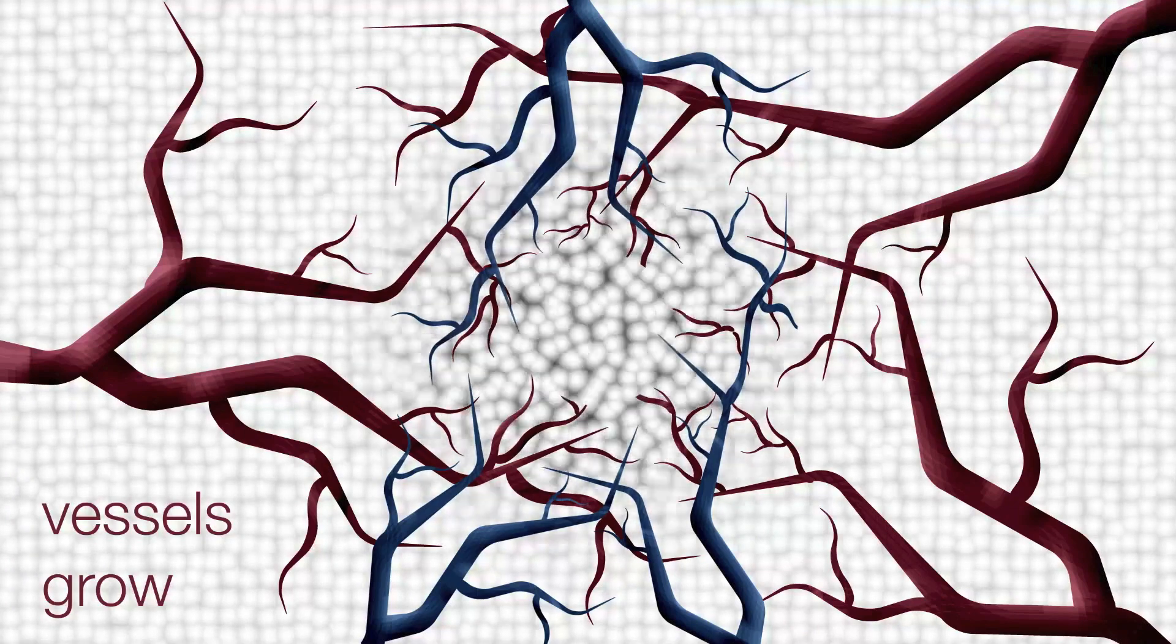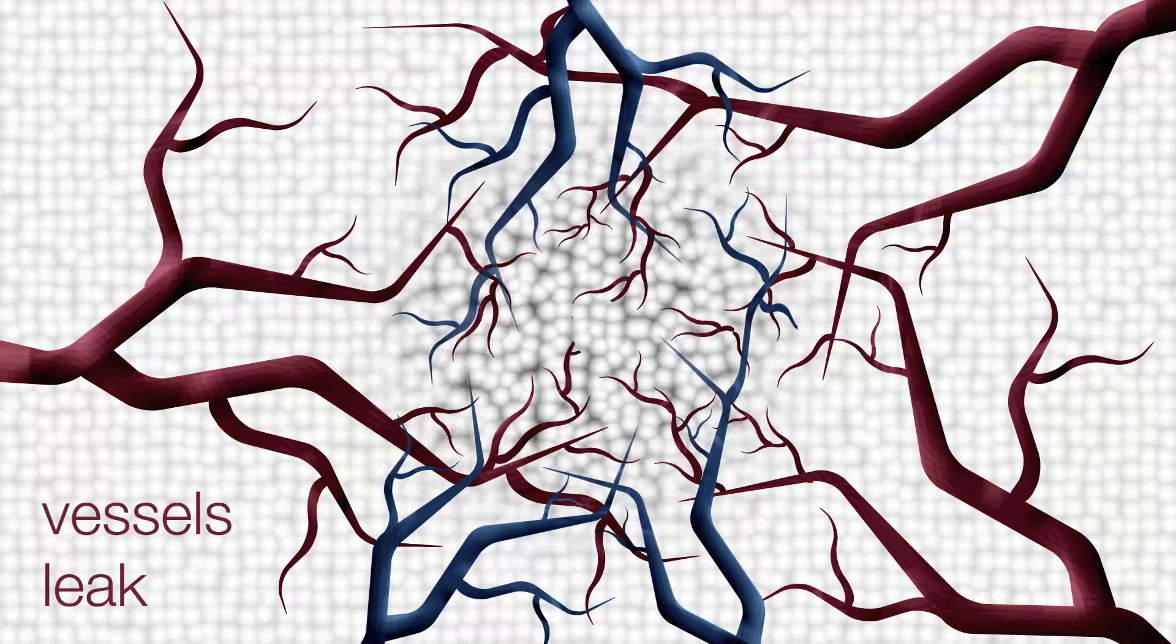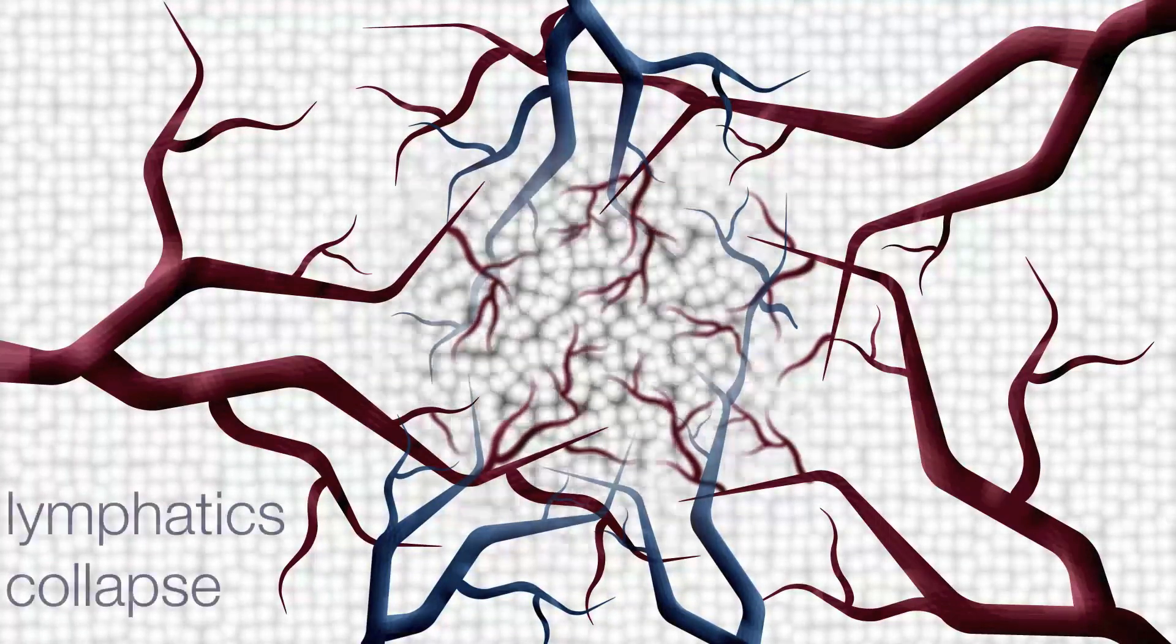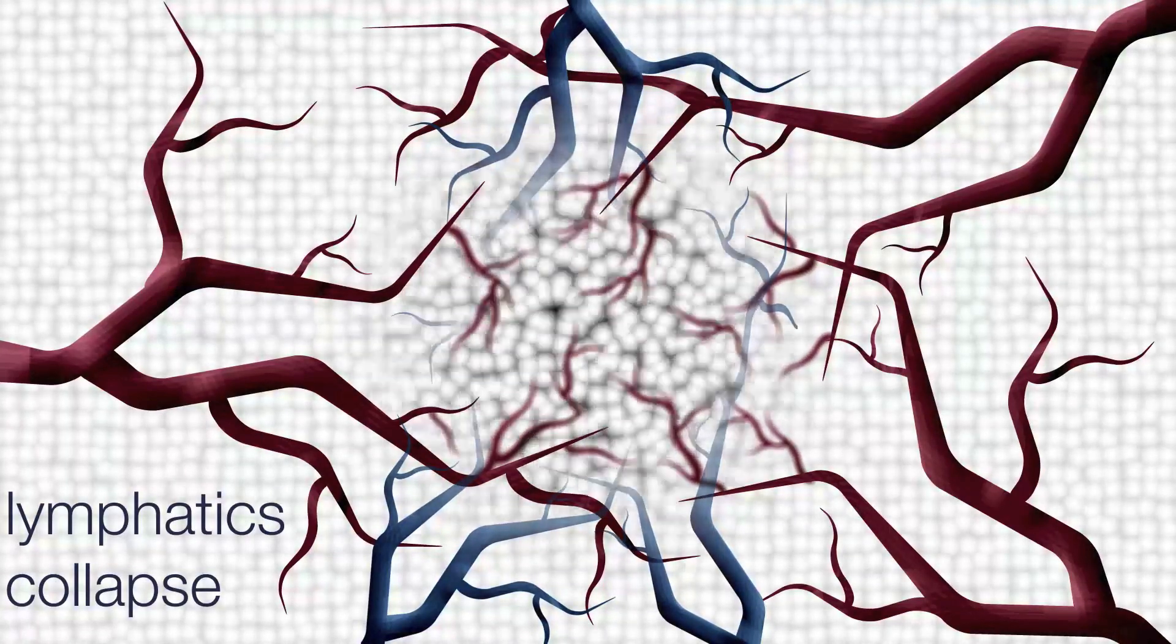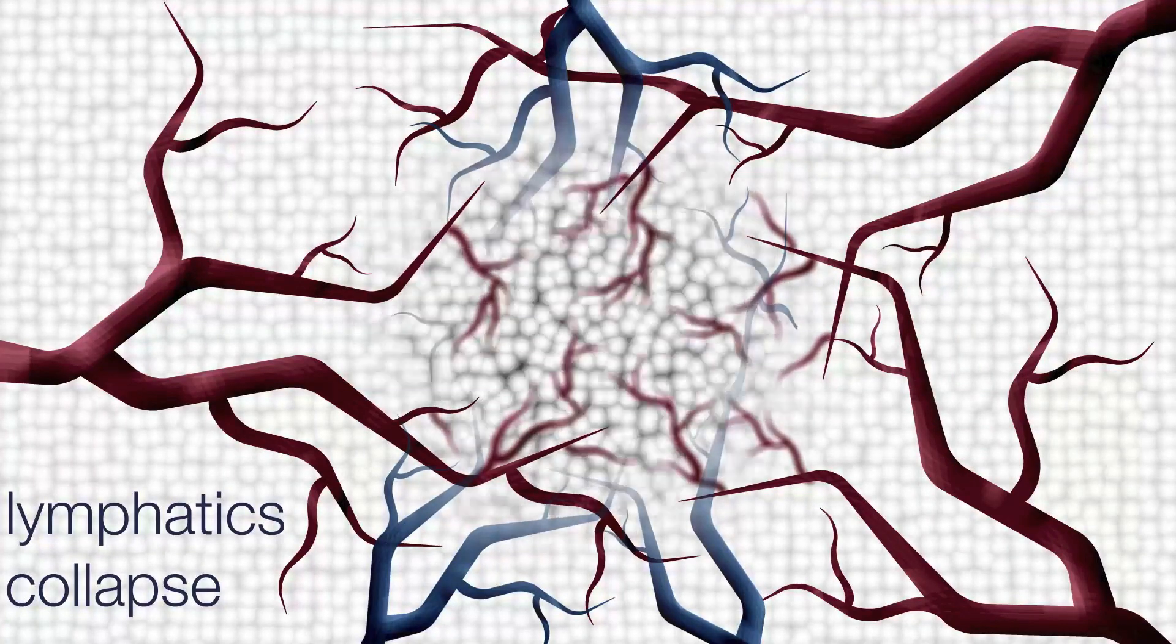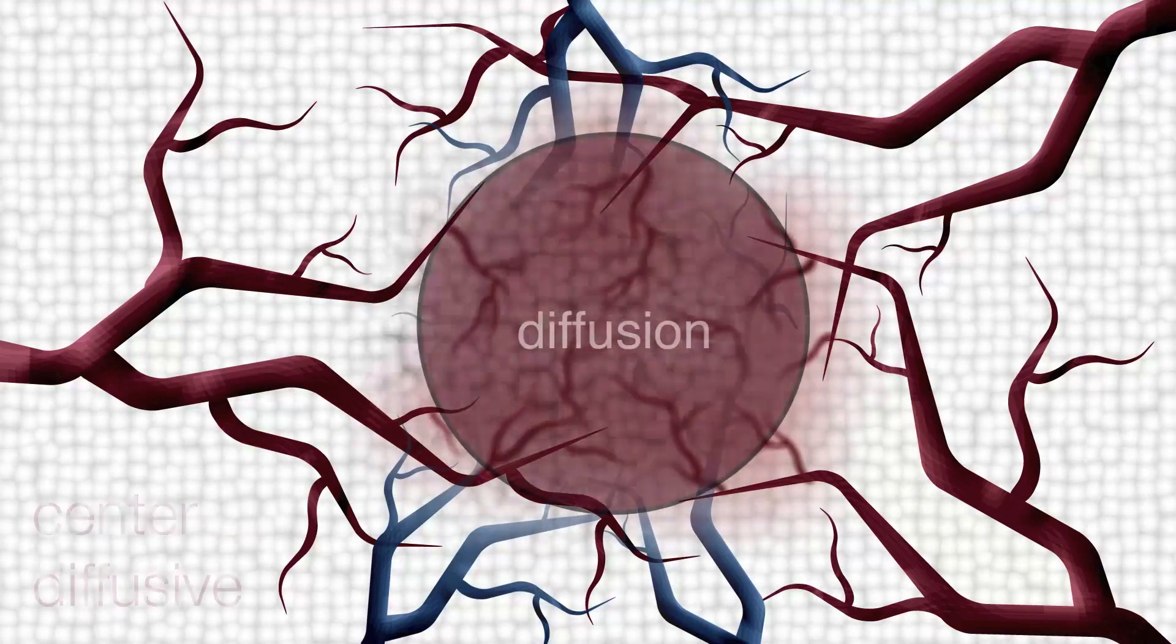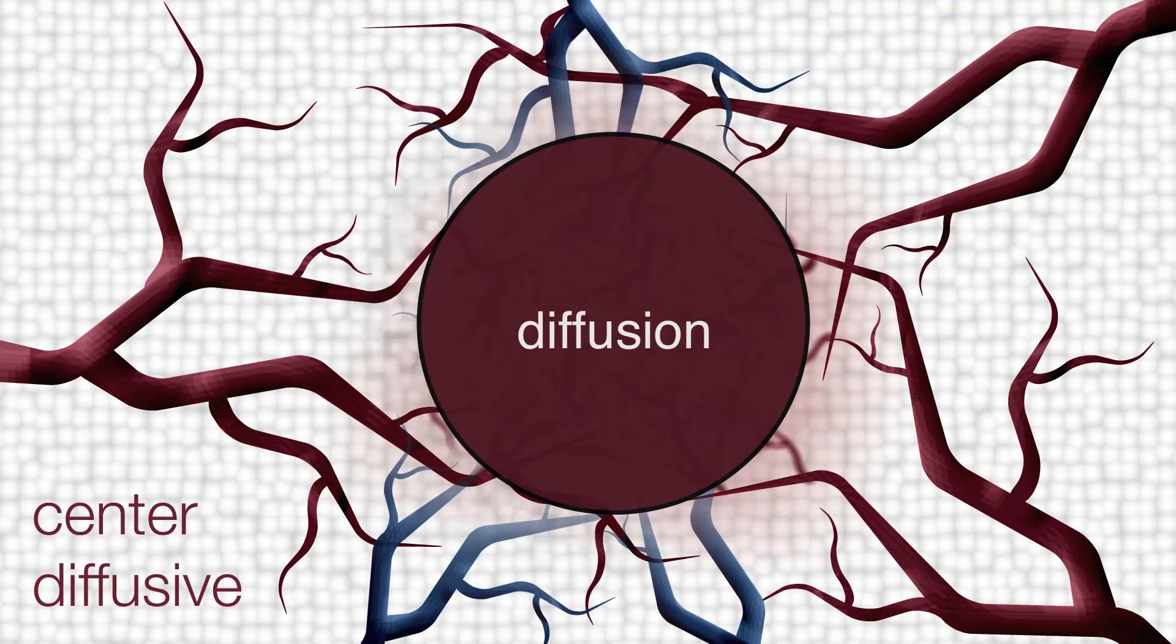These leaky vessels pump liquid into the tumor, thereby increasing its pressure. As the tumor grows, proliferating cells start compressing the lymphatic system, which is supposed to pump liquid out of the tumor. Eventually the lymphatic system collapses and the pressure builds until it is uniformly high, which means that there's no flow.